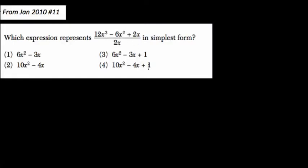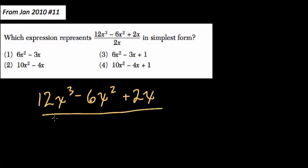Okay, so here we're trying to represent this in simplest form, and that's 12x to the third minus 6x squared plus 2x all over 2x.